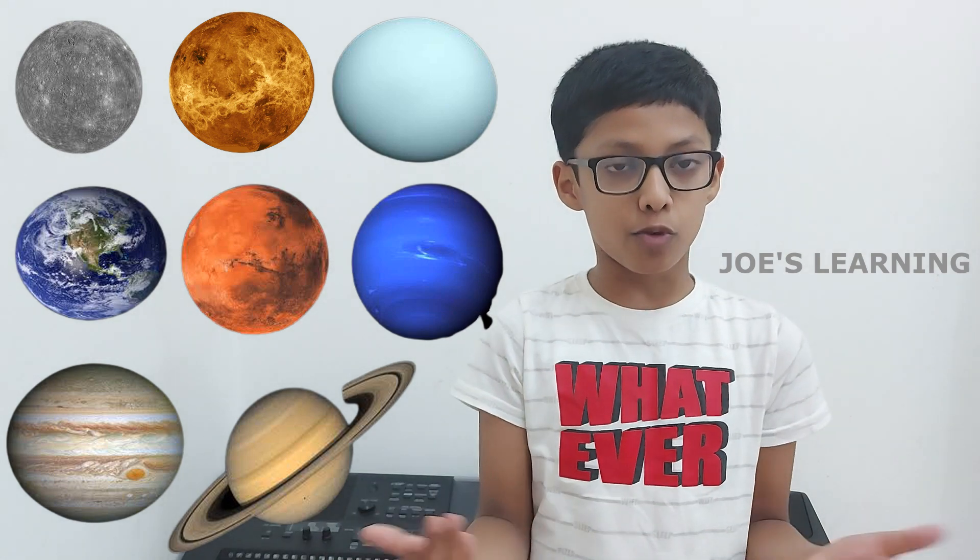They were named as Mercury, Venus, Earth, Mars, Jupiter, Saturn, Uranus, and Neptune.